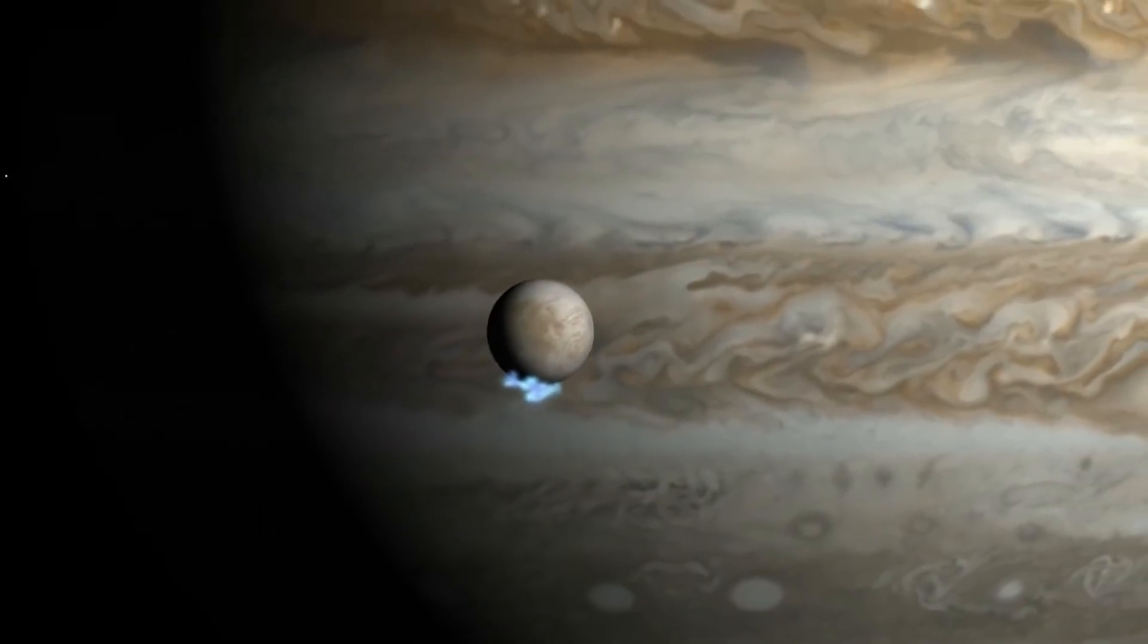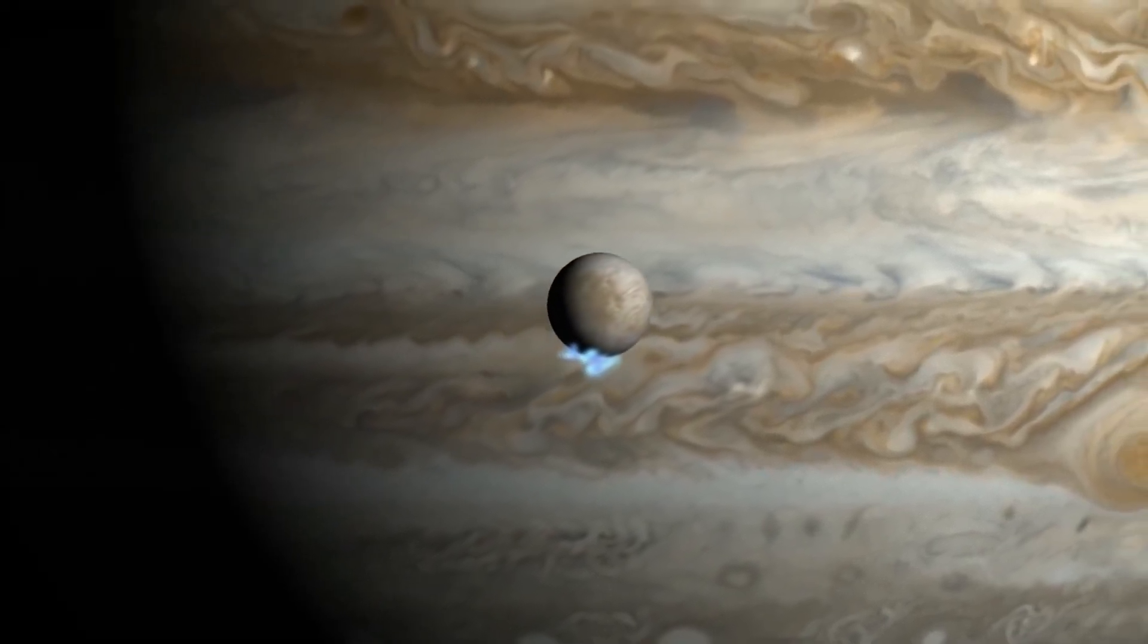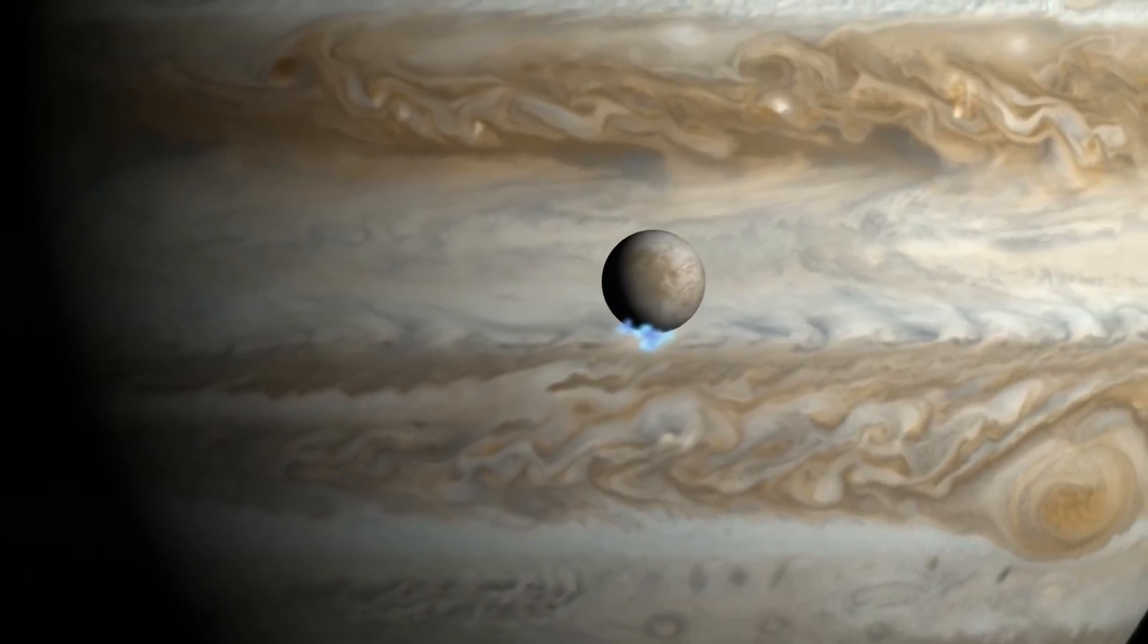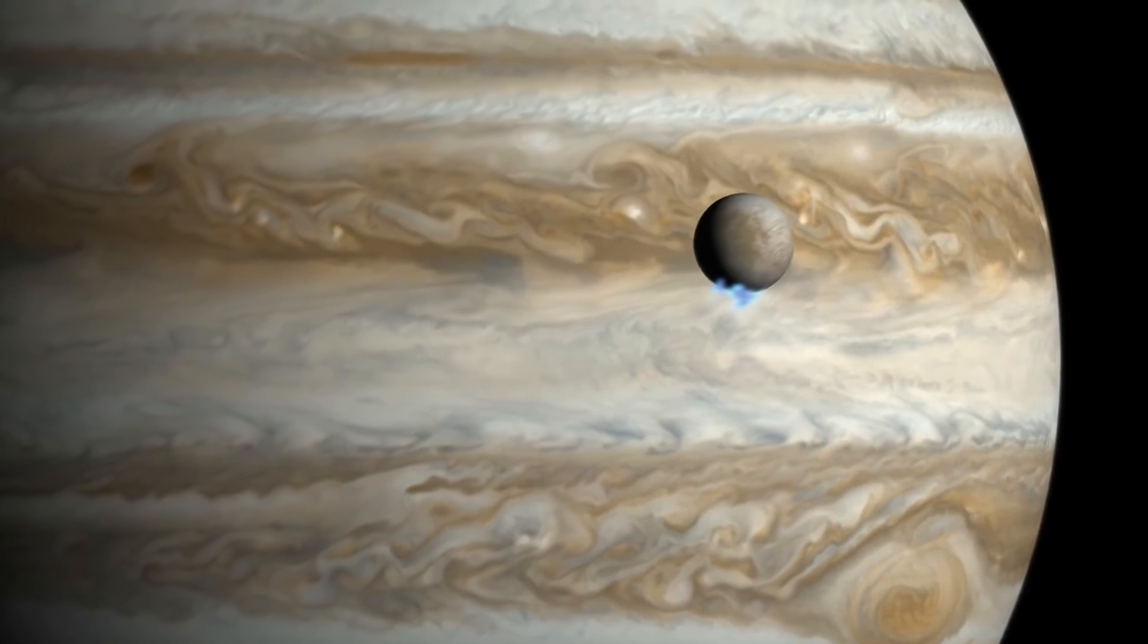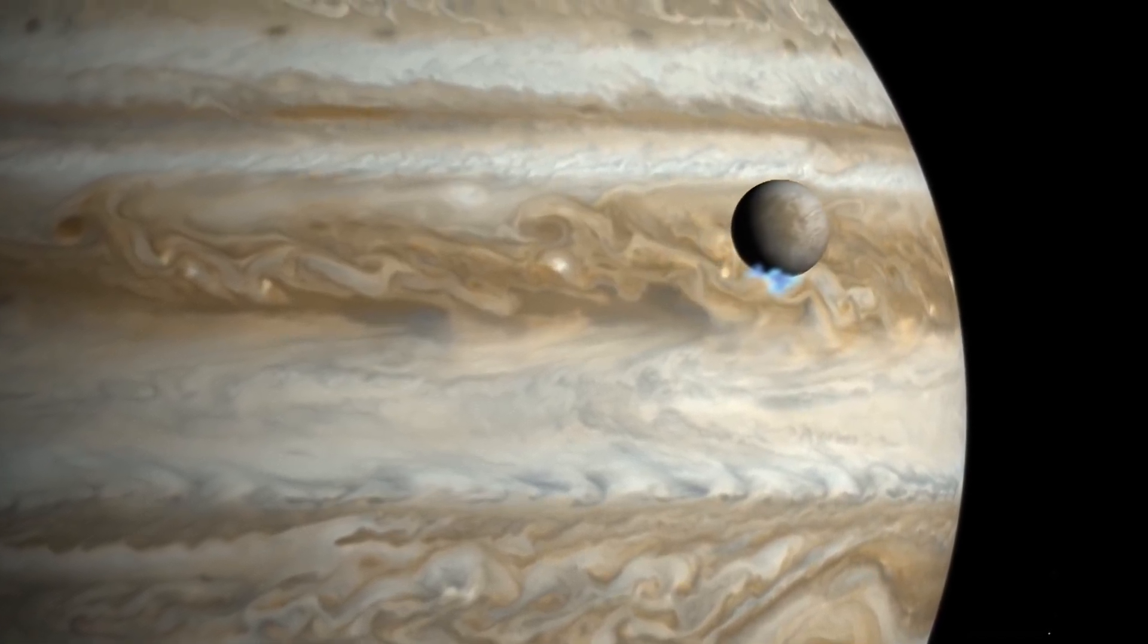In 2013, Hubble provided the first observational evidence of water vapor erupting from the frigid surface of Jupiter's moon Europa, near its south pole.